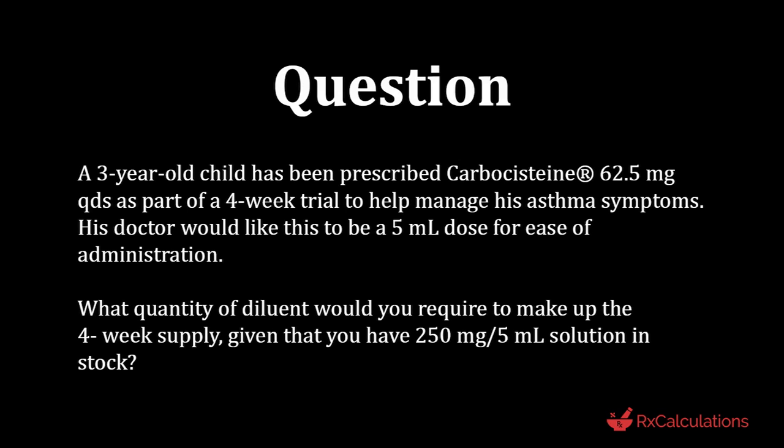Let's get right to the question. A three-year-old child has been prescribed carbocysteine 62.5 milligrams four times a day as part of a four-week trial to help manage his asthma symptoms. His doctor would like this to be a five milliliter dose for ease of administration. What quantity of diluent would you require to make up the four-week supply, given that you have a 250 milligrams per five milliliter solution in stock?